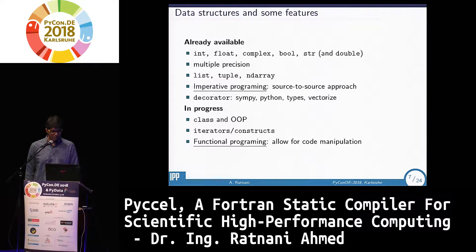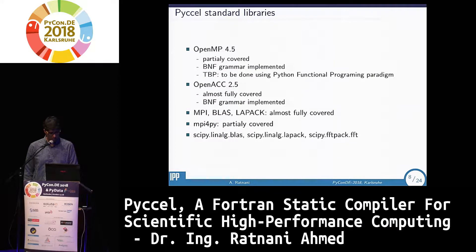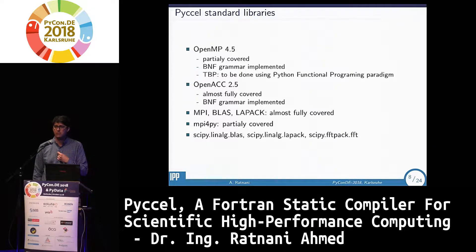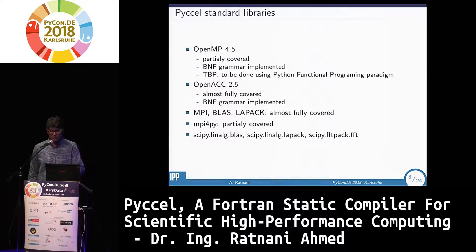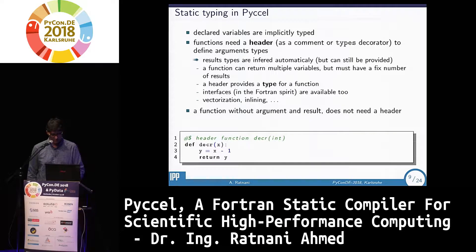One nice thing about Python is that we can implement iterators and constructs easily, which is in the spirit of the functional programming approach. We are covering OpenMP 4.5 using BNF grammar with TextX — a very nice tool for BNF grammars. We also cover OpenACC 2.5, which allows you to target GPUs and CPUs. We cover MPI, BLAS, LAPACK, MPI4Py, and FFT from SciPy using the macro approach.